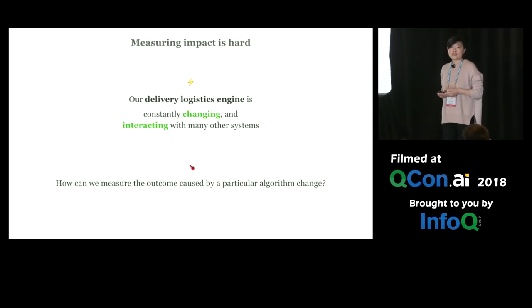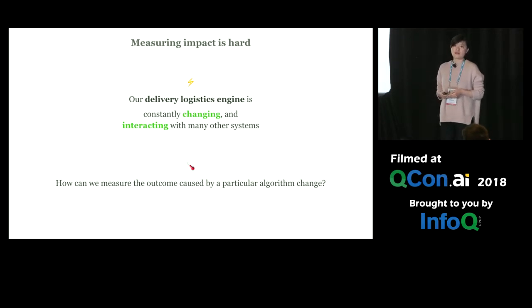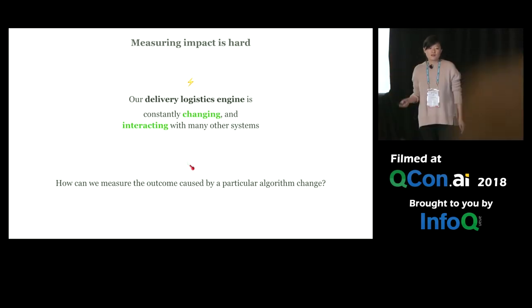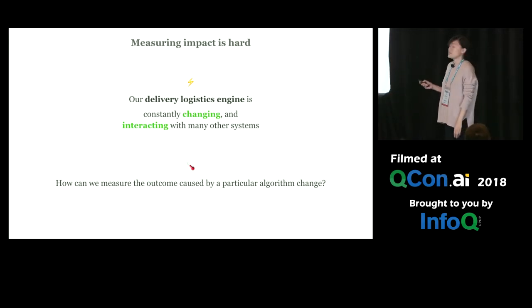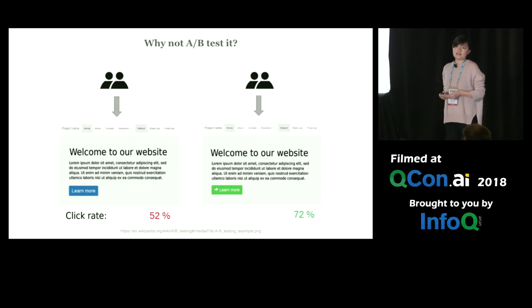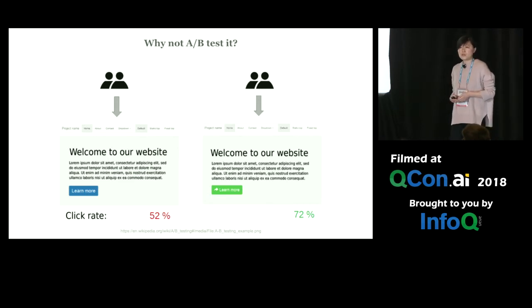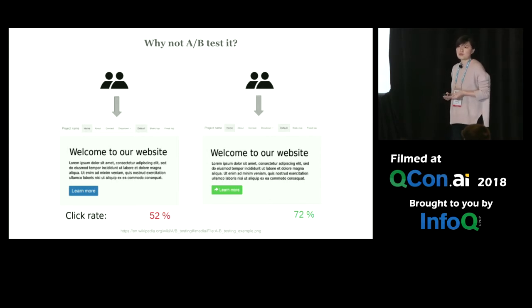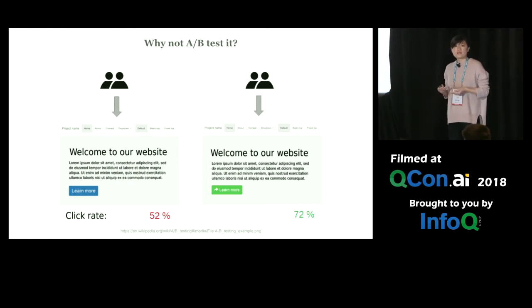Our delivery logistics engine is constantly changing and interacting with many other systems. As a result, a huge challenge is how to measure the outcome caused by any particular algorithm change. Why not A/B test the change? A/B testing is the gold standard for cause and effect discoveries. It is used extensively for customer and shopper application design. We split customers and shoppers into different groups, expose them to different experiences, and measure which experience variant maximizes the outcome of interest.